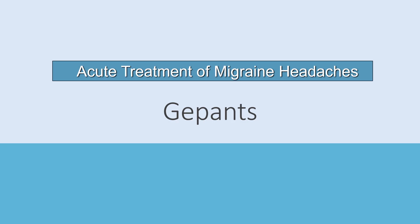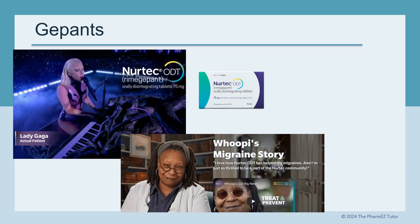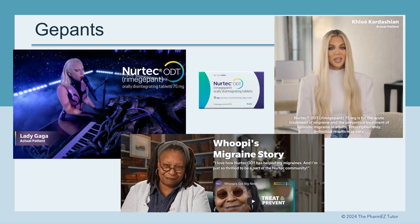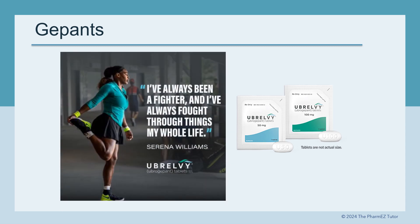The G-PANs — a new class of migraine drugs. Rimegepant, or NURTEC, is a member of the G-PAN class of migraine drugs. You've probably already seen some of the recent celebrity endorsements on TV and social media — Lady Gaga, Whoopi Goldberg, and Khloe Kardashian all commending the use of NURTEC. And Serena Williams supports the use of a different G-PAN, Ubrogepant, or Ubrelvy.